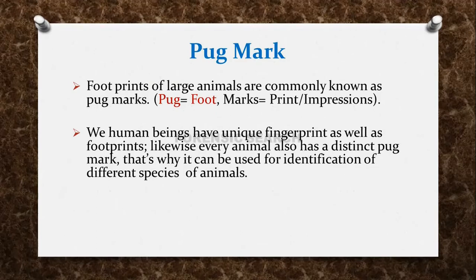We human beings have unique fingerprints as well as footprints. Just as we all know that every human's fingerprint is different, similarly our footprint is also different. Likewise, every animal also has distinct Pugmarks. That's why it can be used for identification of different species of animals. Just as our fingerprints are unique — no two persons in the world have the same fingerprint — in the same way, animals also have different Pugmarks. So on the basis of those Pugmarks, we can identify different species of animals.